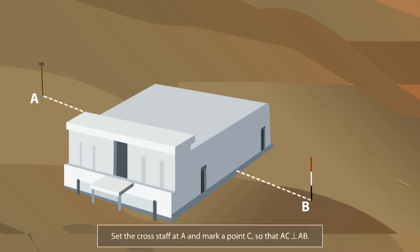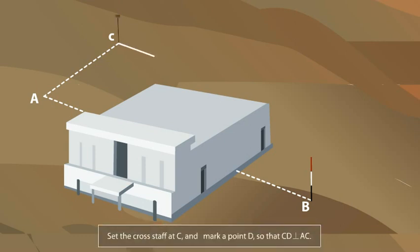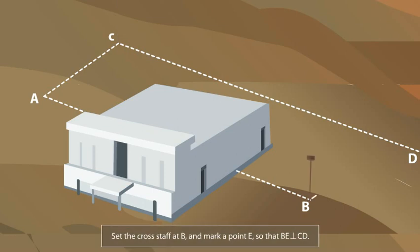Set the cross staff at A and mark a point C so that line AC is perpendicular to line AB. After that, set the cross staff at C and mark a point D so that line CD is perpendicular to line AC. Note that you should mark D at a place beyond both the obstacle and point B. Set the cross staff at point B and mark a point E on line CD so that line BE is perpendicular to line CD.